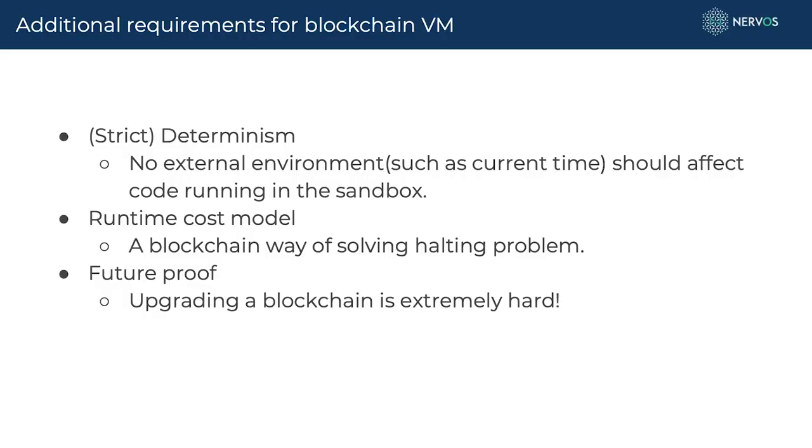A blockchain VM only has a limited amount of time to execute, so it must have a runtime cost model. In a Docker environment or JavaScript, you can say 'let it run for five seconds, then kill it.' But on a blockchain VM, five seconds on one machine may be quite different from five seconds on a different machine. So we want a runtime cost model where each instruction costs a defined amount of cycles, and that cost must be identical across different machines.